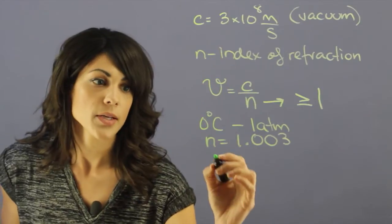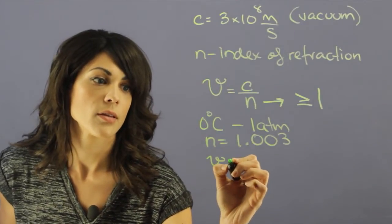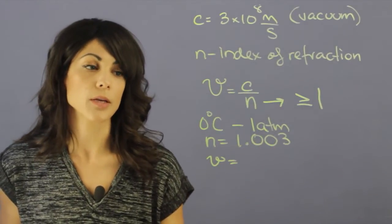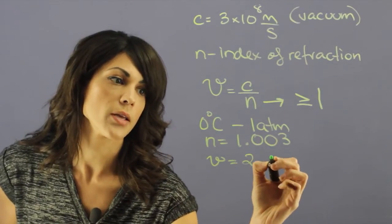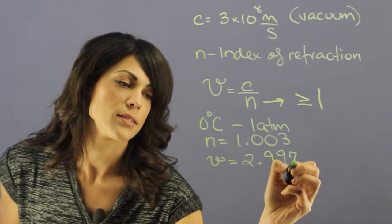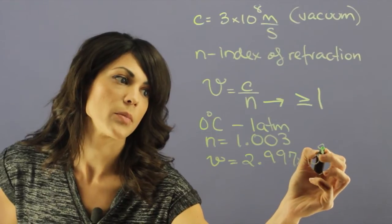If we divide 3 × 10^8 by 1.003, we get that the speed of light here is 2.997 × 10^8 meters per second.